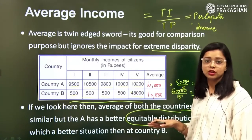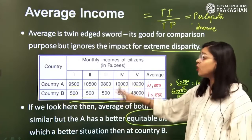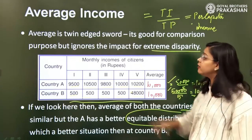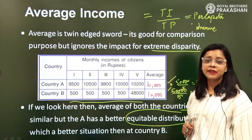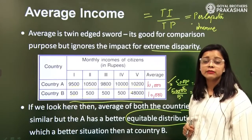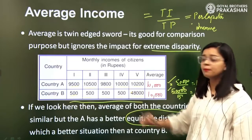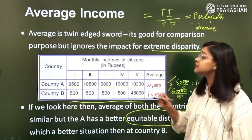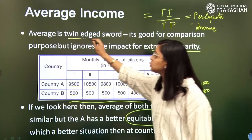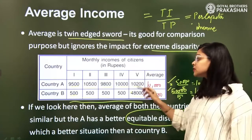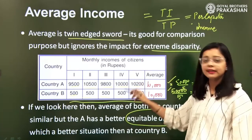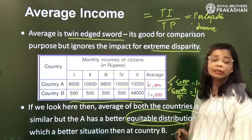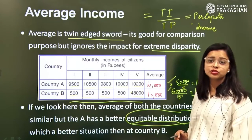From this, we cannot conclude that both countries are at a similar level. If we take the concept of average income and compare it, we will say both are equal — but that is misleading. That is why per capita income is a double-edged sword: despite giving a basis for comparison, it totally ignores the concept of equitable distribution of income.